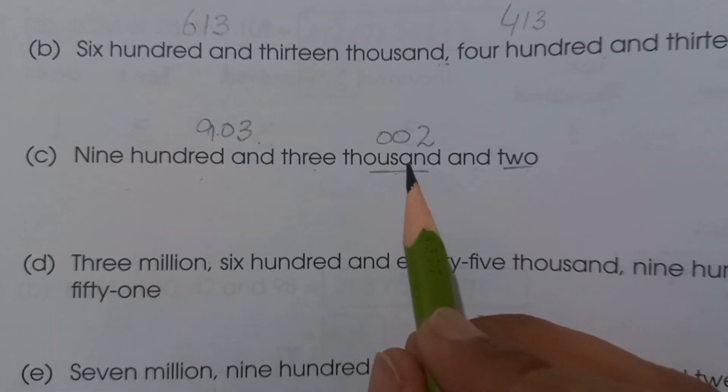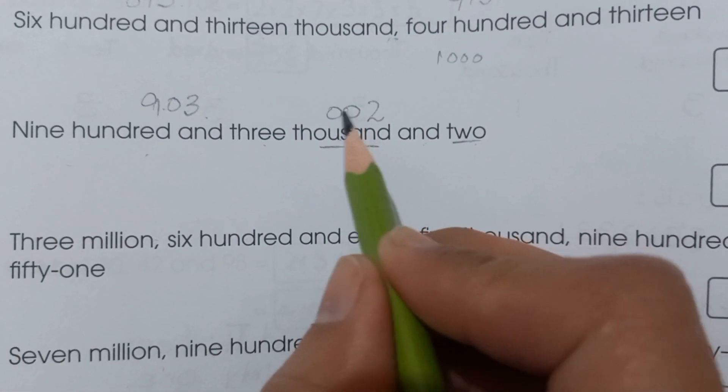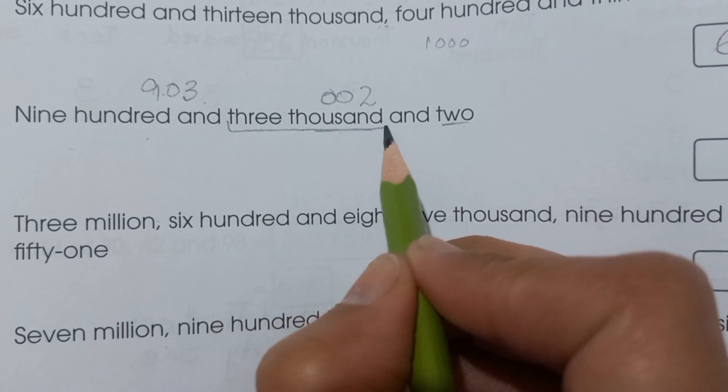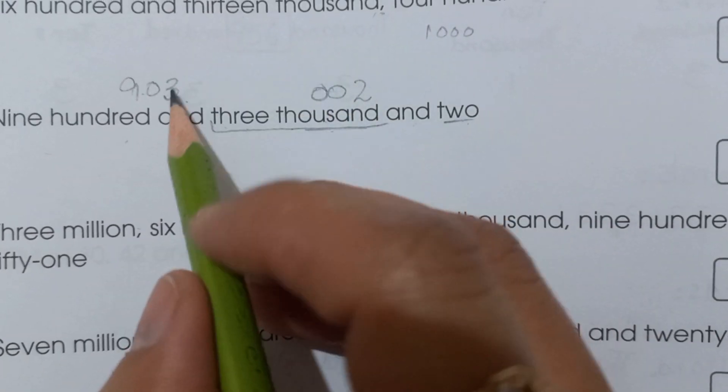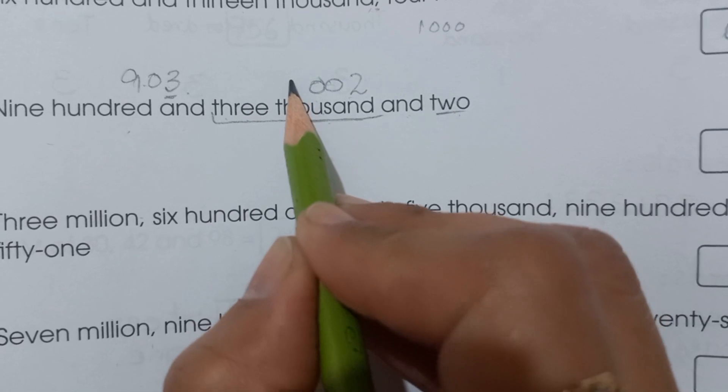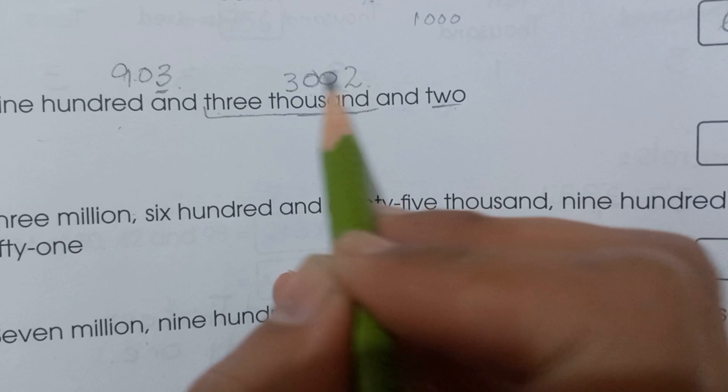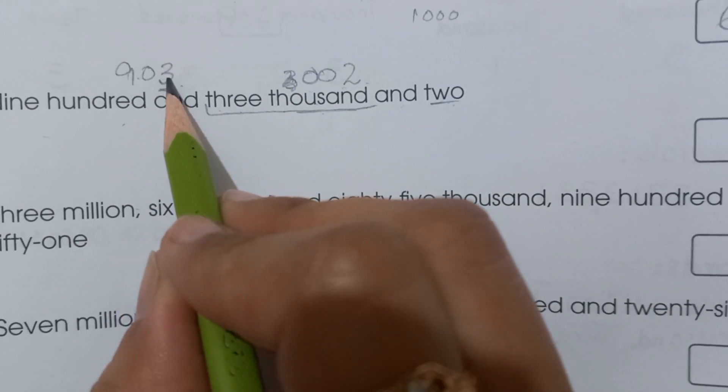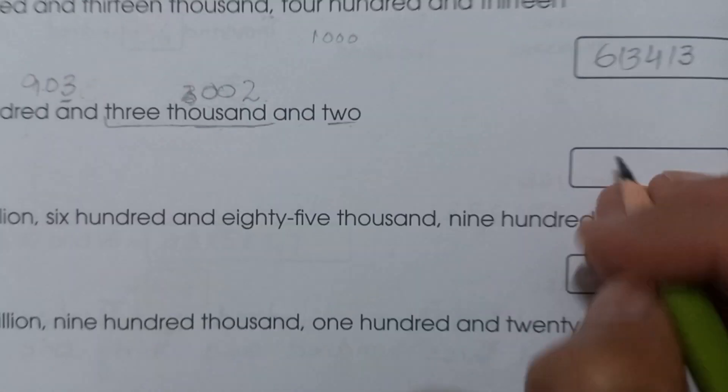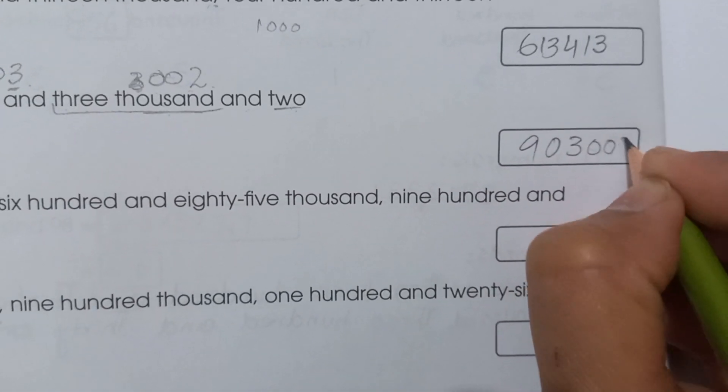You're thinking: in thousand there are three zeros - one, two, three. So why did we write only two zeros? Because we need to write this three with the thousand. When we combine them, it becomes three thousand two. Since we already wrote the three, we don't write three again. So we write: nine zero three, double zero, two. This is the answer: 903,002.